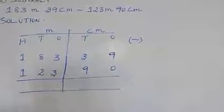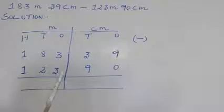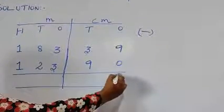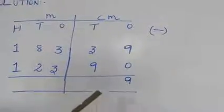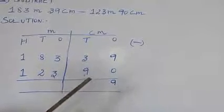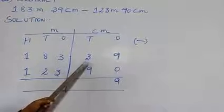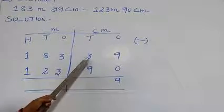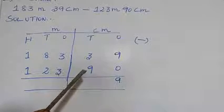Then you come to subtract. For subtraction, 9 minus 0, what do you get? Yes, very good, you get 9. Any number, 0 subtracted from any number, you get the same number. Then next, in tens place you have 3. Can you subtract 9 from 3? No, you can't subtract because 9 is the greater number.